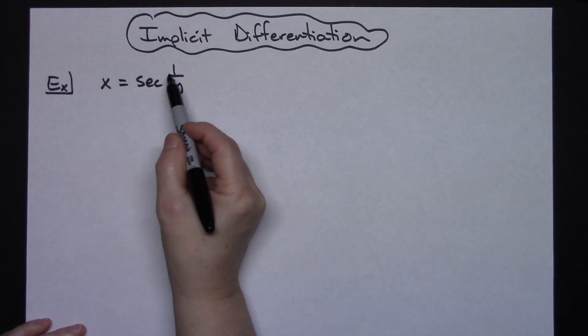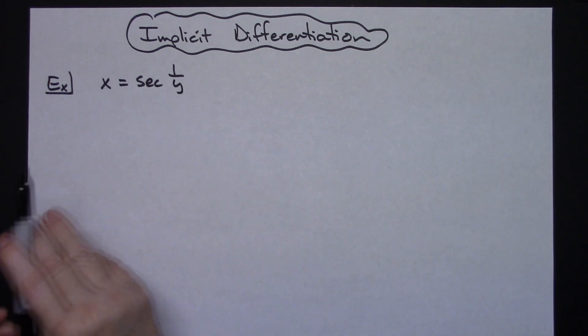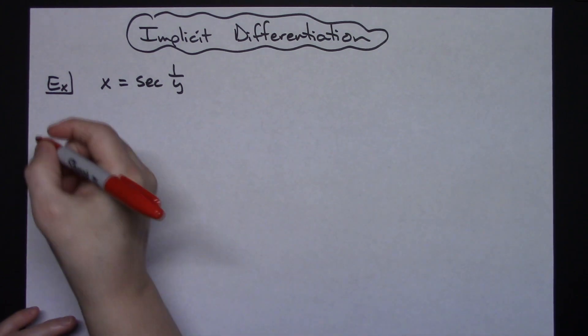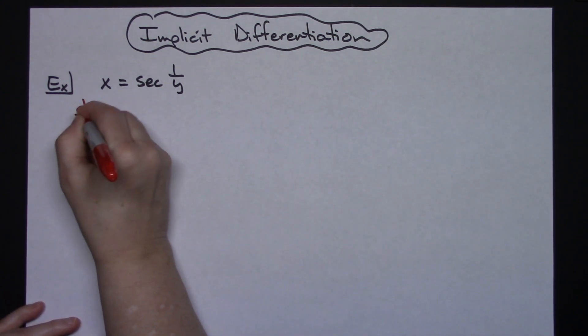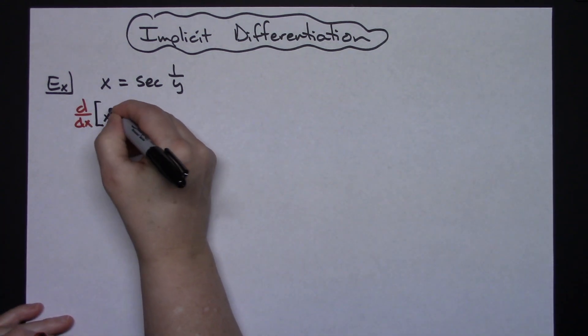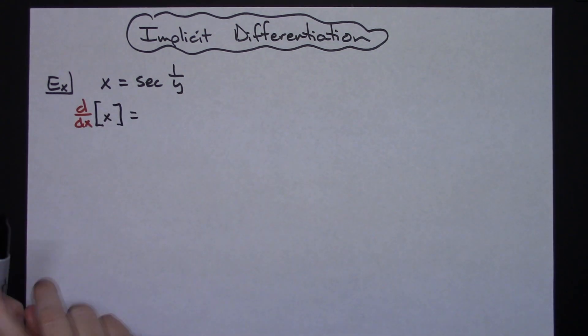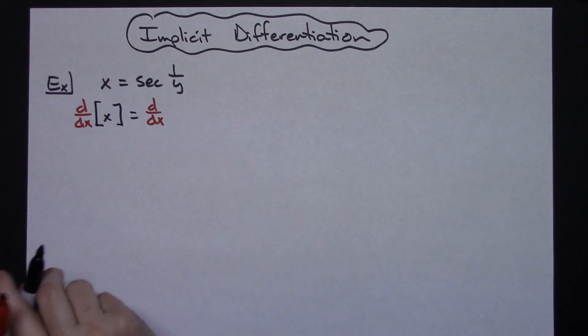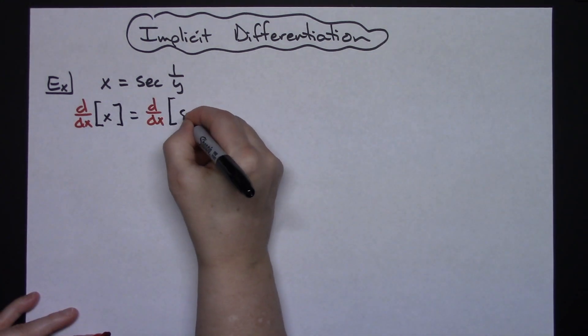I've got x is equal to secant 1 over y here. So first of all I want to indicate that I'm going to be taking the derivative of both sides. So d/dx on the left hand side and box and whatever you're doing there shows you're going to get ready to take the derivative here d/dx and then of what is on the right hand side.